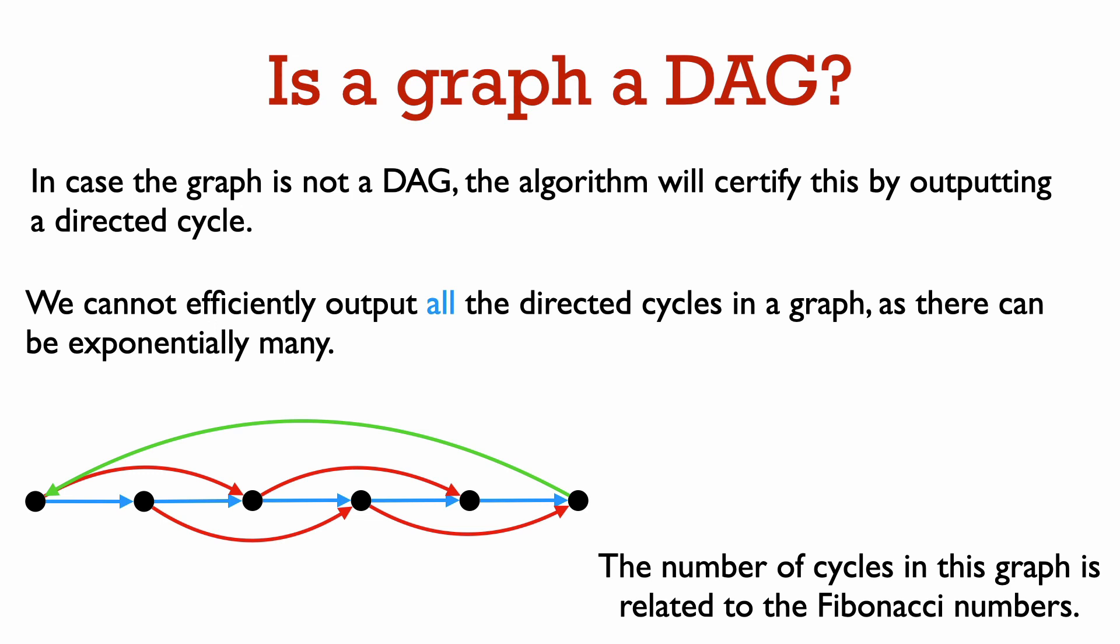So the blue edges go from a vertex directly to the next vertex. The red edges go from a vertex, they skip a vertex, and they go to the second vertex away to the right. And we also have one edge directed from the last vertex on the right back to the beginning.